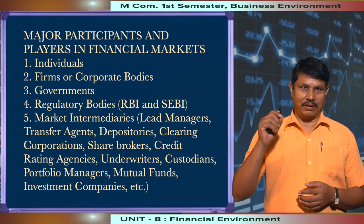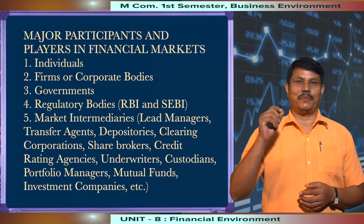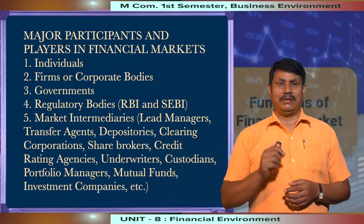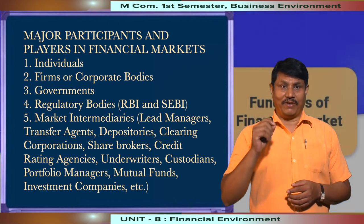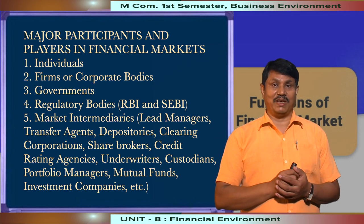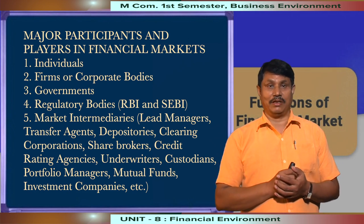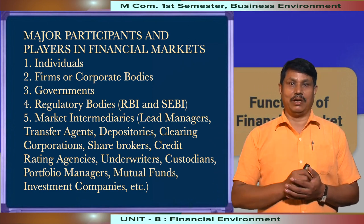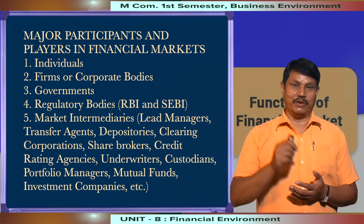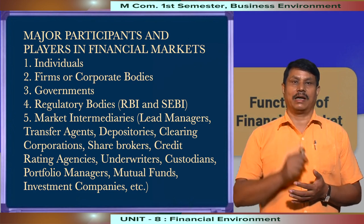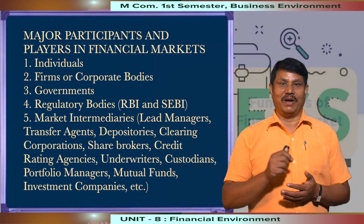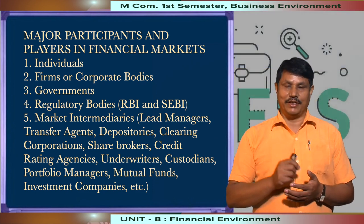Now we will discuss about major participants and players in the financial markets. There are five categories of participants in the financial markets. They are individuals, firms or corporate bodies, governments, regulatory bodies, and market intermediaries.